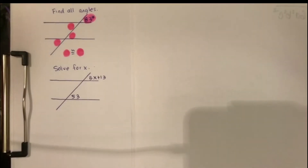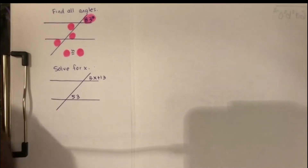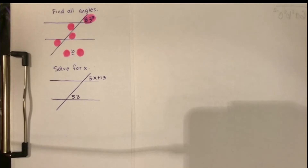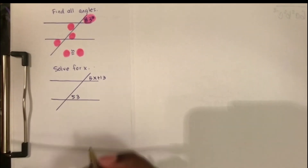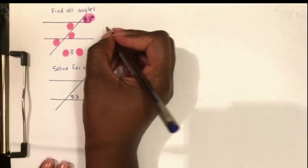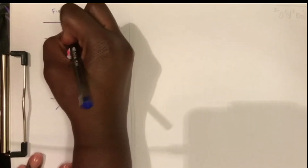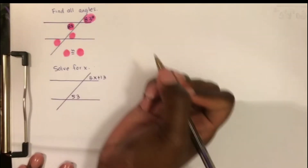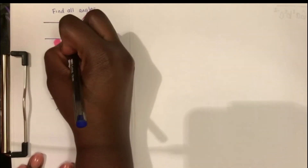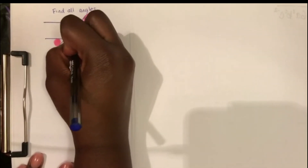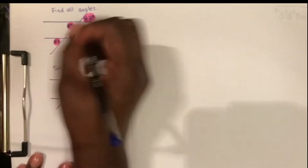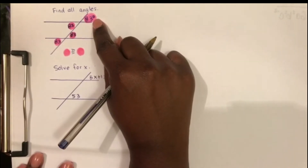Just in case you forgot, congruent means that their measures are the same. So if their measures are the same, that means the measure of this angle is 83 degrees, and all of the other angles are 83 degrees. I'm just copying what was originally there.